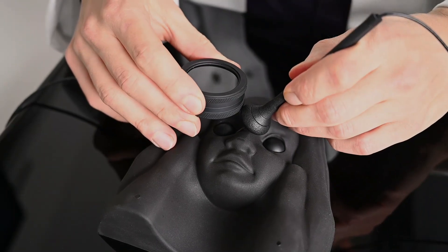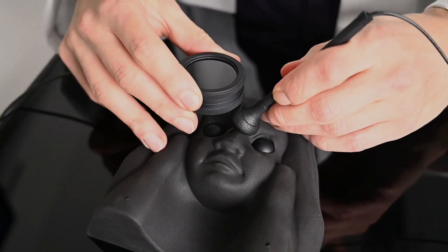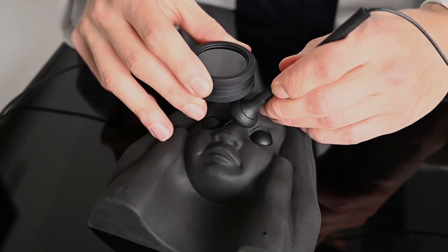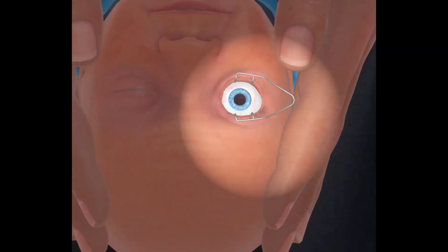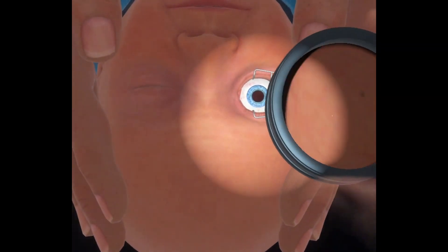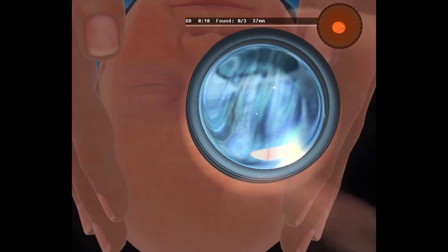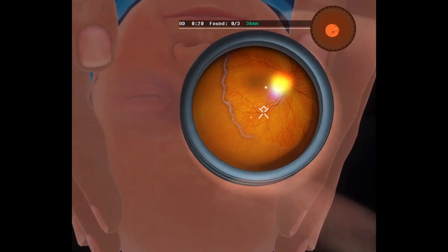When wearing the device, trainees are presented with an immersive 3D simulation of the patient. The indirect ophthalmoscope mimic and the handheld lens must be aligned precisely with the patient's eye to visualize the retina.